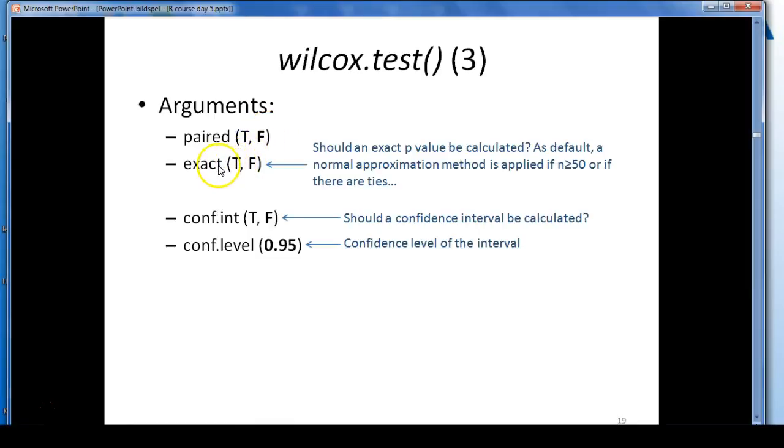The second argument here is exact. And it might seem a bit odd, because supposedly the non-parametric test should be exact, but in reality, if you have ties, that is equal values in both groups, or if you have 50 observations or more, R uses a normal approximation method, and if you really want an exact value, then you would have to set exact to true.